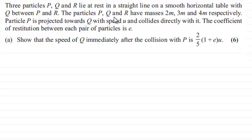The particles P, Q and R have masses of 2m, 3m and 4m respectively. Particle P is projected towards Q with a speed of U and collides directly with it. The coefficient of restitution between each pair of particles is E.